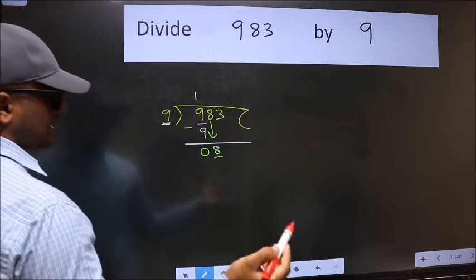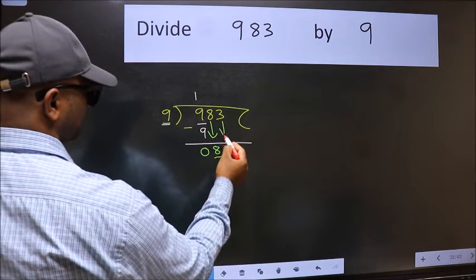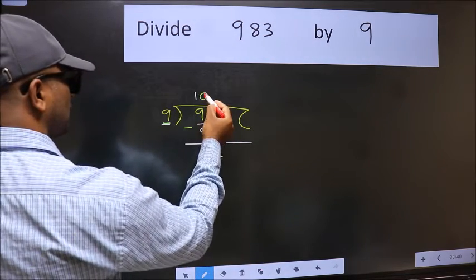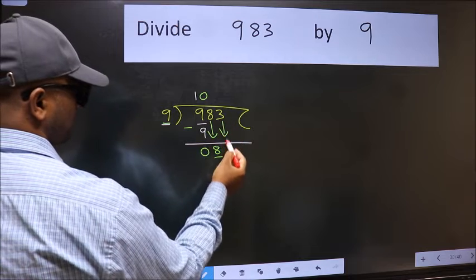So we should bring down the second number. And the rule to bring down the second number is we should put 0 here. Then only we can bring this number down.